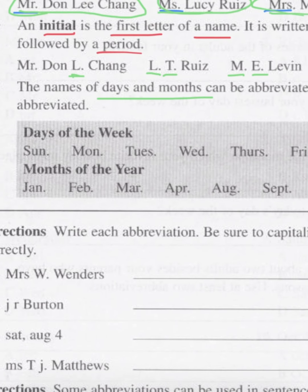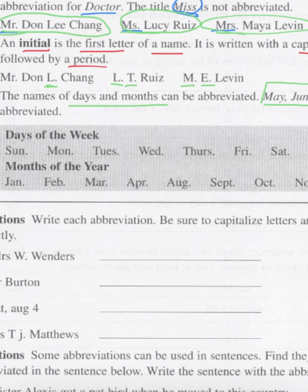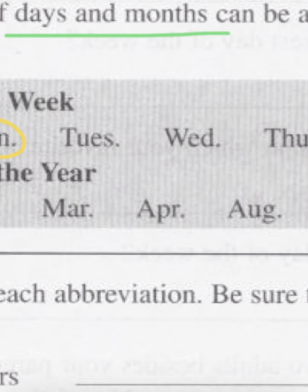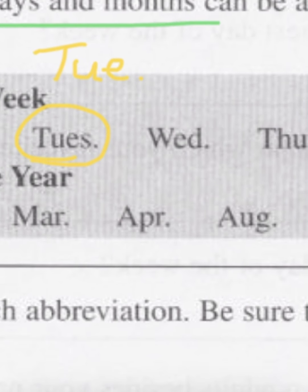Days of the week — these are the most common abbreviations, though not the only ones. Sunday: capital S-U-N period. Monday: capital M-O-N period. Tuesday: capital T-U-E-S period. Sometimes you'll see Tuesday as capital T-U-E period, and even possibly T-U, but usually T-U-E.